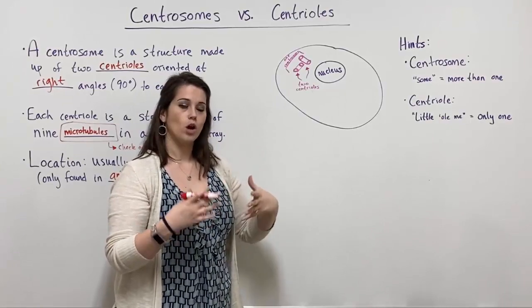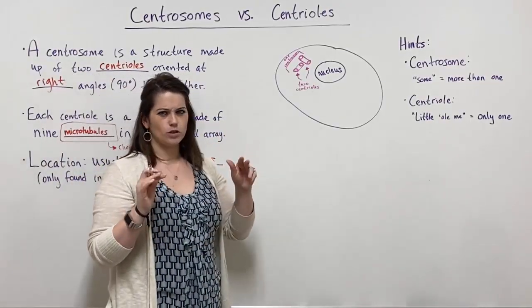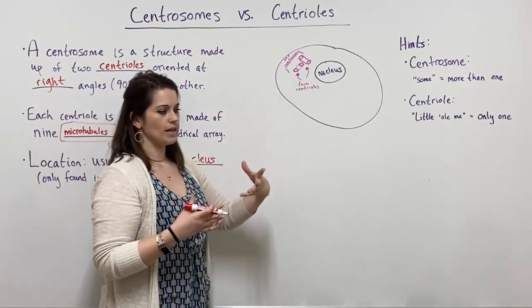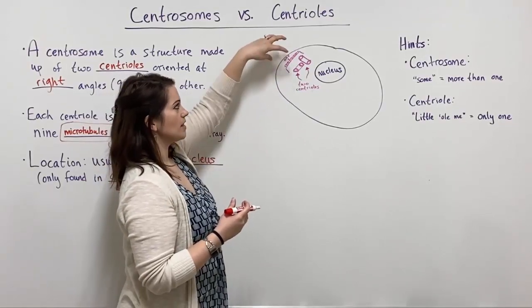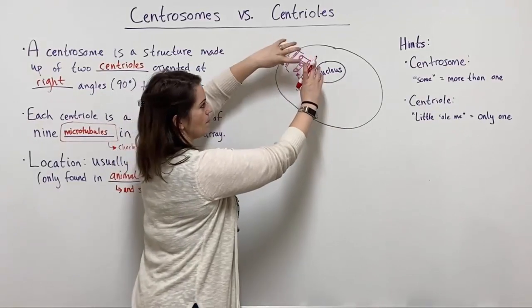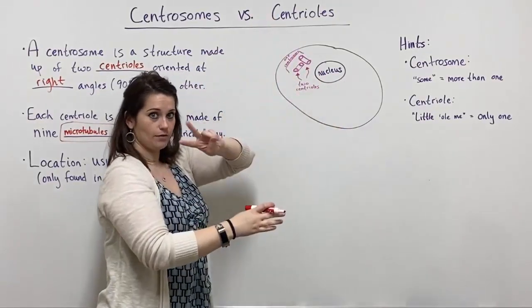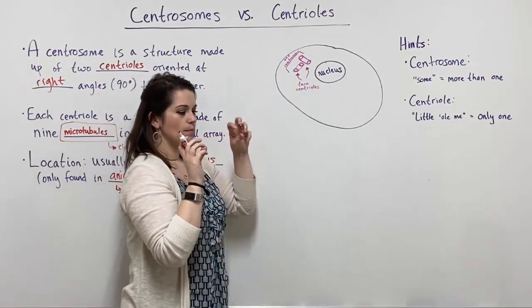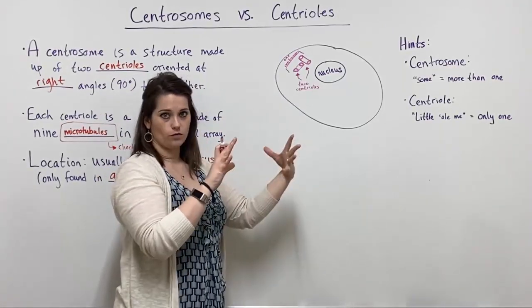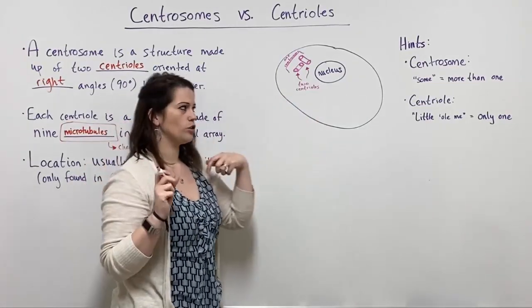Plant cells have different structures for organizing their microtubules. The centrosome is the microtubule organizing center. It will duplicate itself during cell division so that you'll have two centrosomes — they'll move to either side of the cell. Both of those centrosomes will have two centrioles, and that's where the spindle — the mitotic spindle — grows from to attach to the chromosomes and pull them apart during cell division.